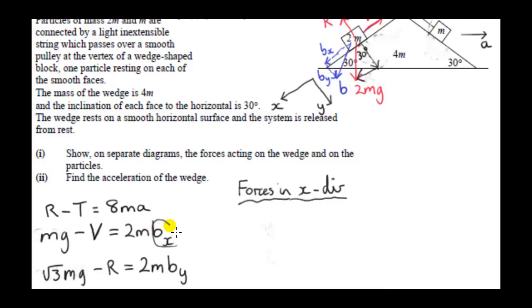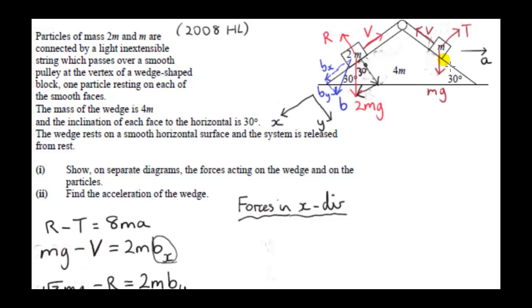Notice that Bx is not as simple as it was in previous examples. In previous examples, Bx was just g sin 30 — g sin theta — regardless of the mass. So the extra unknown here is V, the string tension.